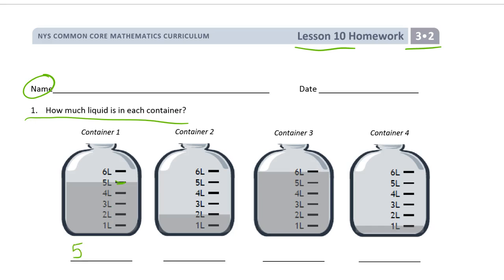So we're going to write 5 liters, that's how you write it. Now container 2 is right at the 2 liter mark, so it's 2 liters. Container 3 is at the 6 liter mark right up here, so it's 6 liters.